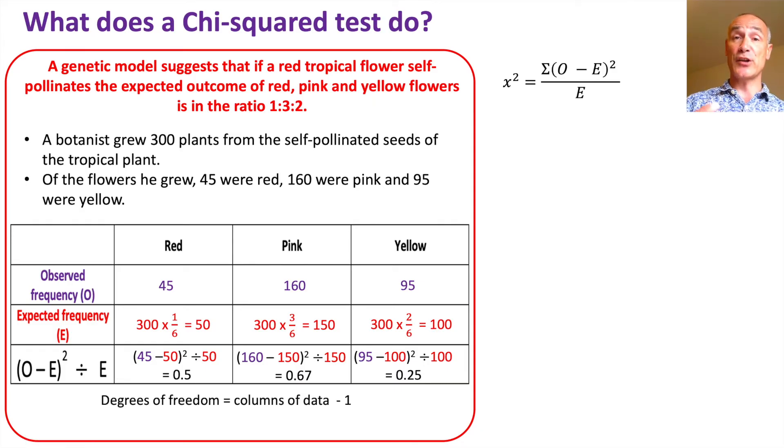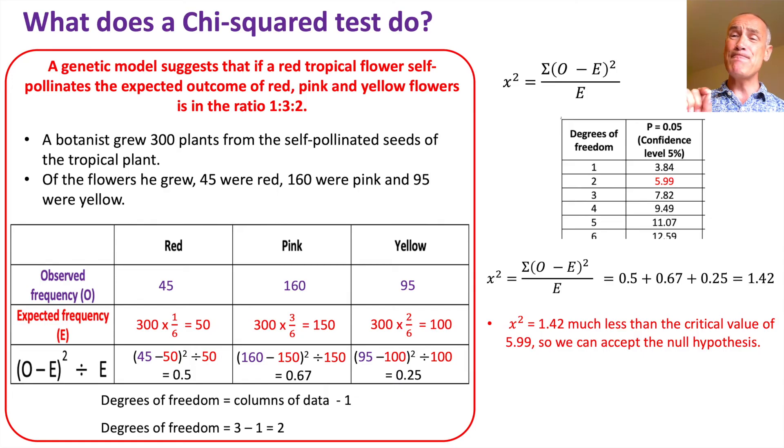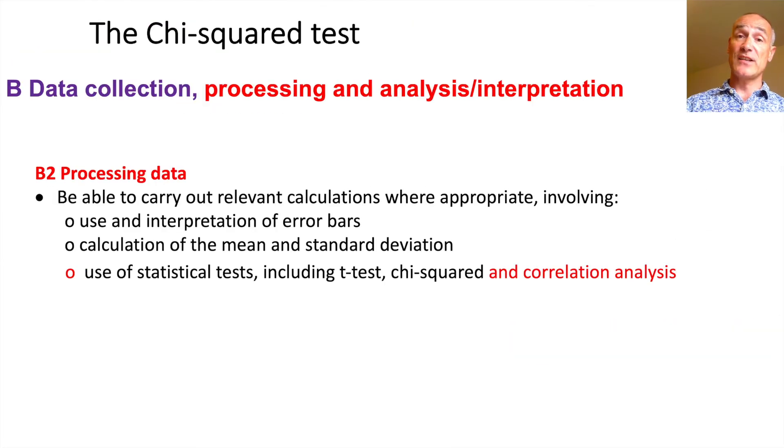Now our degrees of freedom are the columns of data minus 1. We've got three columns of data: red, pink, and yellow. So it's going to be 3 minus 1 which is degrees of freedom 2. So if I look at the confidence values, and I'm going to do a 5% confidence on this, we're looking for a critical value of 5.99. So our chi-squared value is each of those added together, which comes to 1.42. And that chi-squared value of 1.42 is much less than the critical value of 5.99. So we accept the null hypothesis, which means there's no significant difference between the observed data or the observed frequency and the expected frequency. So the botanist can accept the genetic model with a confidence of 95%. So we've looked at the chi-squared test.